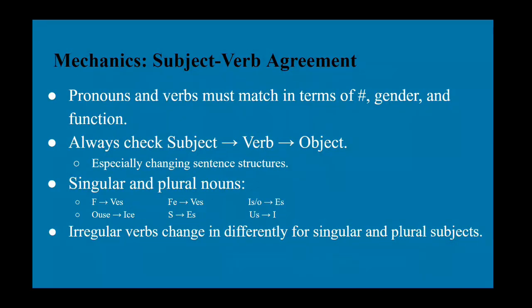Make sure your answer choice has subject-verb agreement — all pronouns and verbs must match in terms of number, gender, and function. For example, 'you was watching TV' is incorrect because 'was' is a singular verb; instead, you'd use 'were.' Make sure the subject, verb, and object agree throughout the sentence, including across dependent and independent clauses. Also know basic English patterns for converting singular to plural nouns, like 'leaf' becoming 'leaves.'